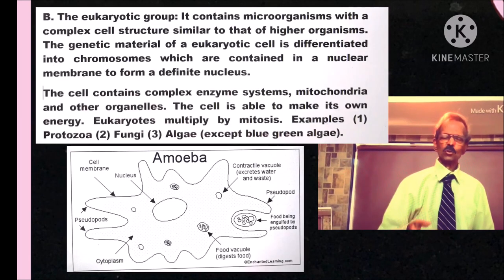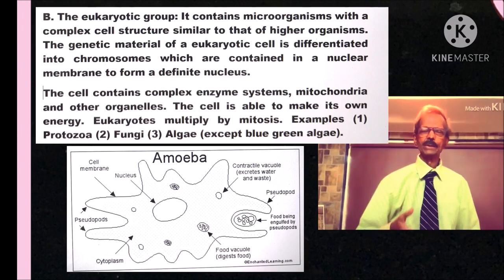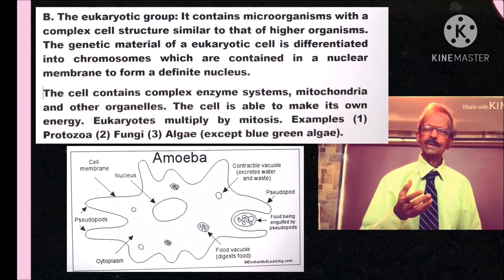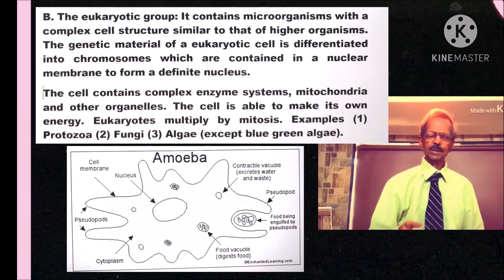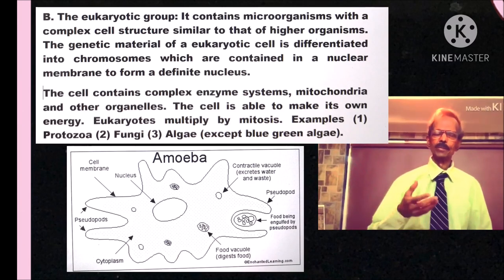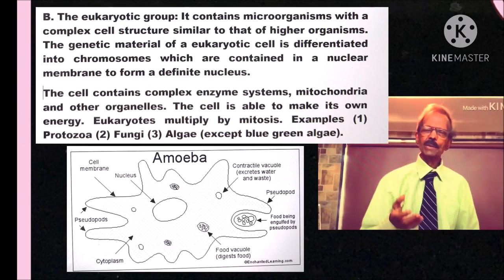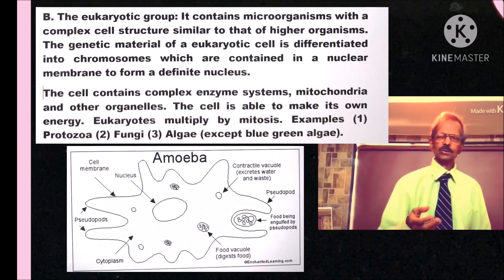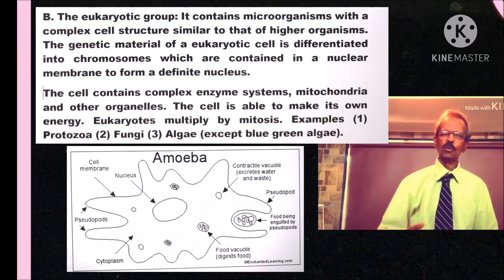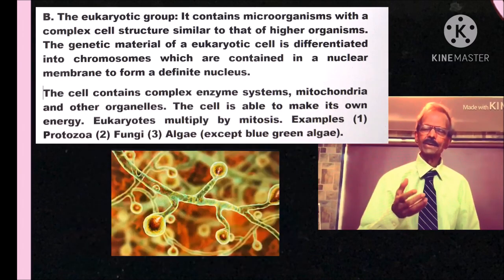The eukaryotic group contains microorganisms with a complex cell structure similar to that of higher organisms. The genetic material of a eukaryotic cell is differentiated into chromosomes which are contained in a nuclear membrane to form a definite nucleus. The cell contains complex enzyme systems, mitochondria and other organelles. The cell is able to make its own energy and eukaryotes multiply by mitosis.